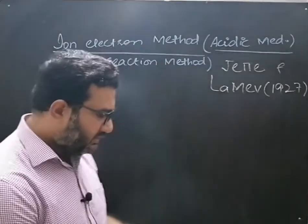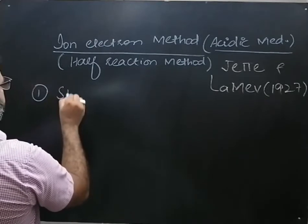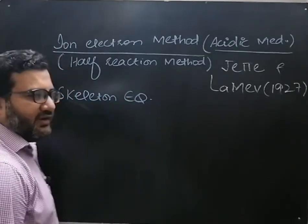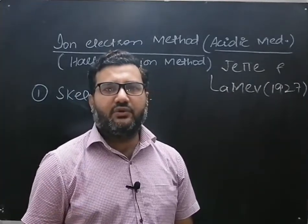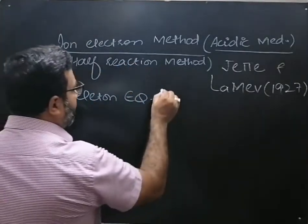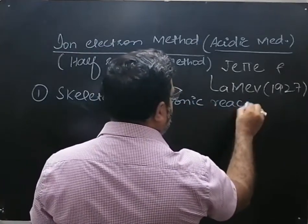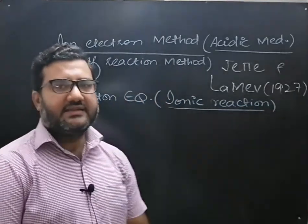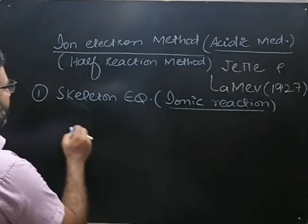The first rule is that you will write down the skeleton equation. Sometimes the skeleton equation is given to you, and sometimes information is given and you will have to formulate the skeleton equation. This skeleton equation is usually an ionic reaction, meaning that the substances involved in the reaction will be written in the form of their ions.